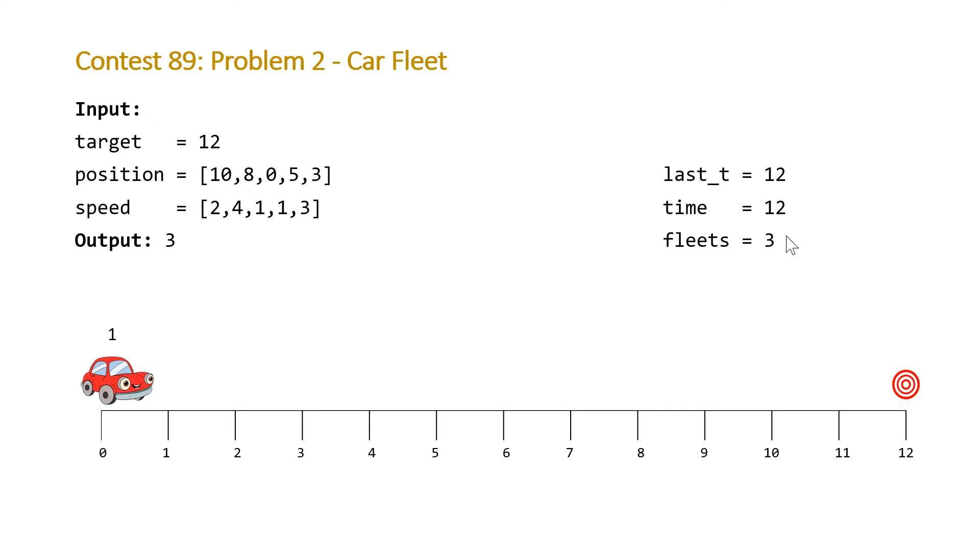And it's the general idea. So we just need to sort our cars by initial position and pair the speeds with that so we are able to do our calculation of this time. And then just one by one, we process these. And the trick is just to remember the last time that a car arrived. And whenever the time of the current car is greater than the last time that the previous car arrived at the target, we know this constitutes or creates a new fleet. So that's our algorithm. Let's take a look at our code.